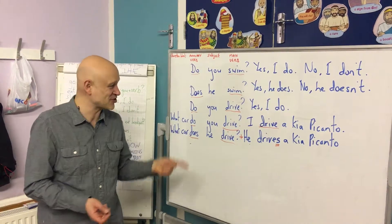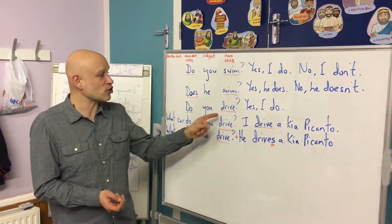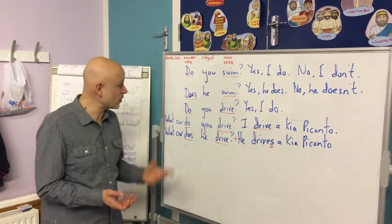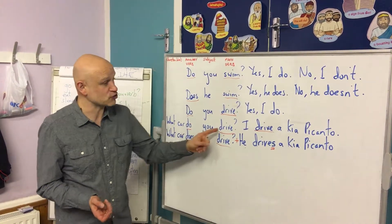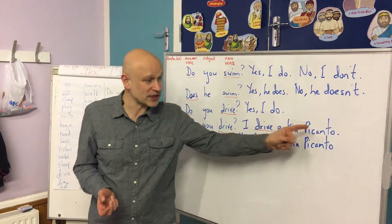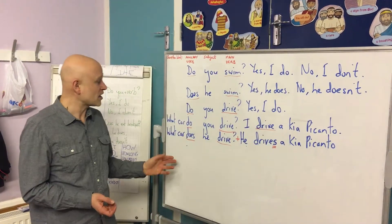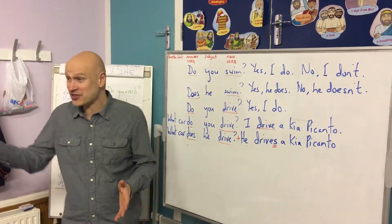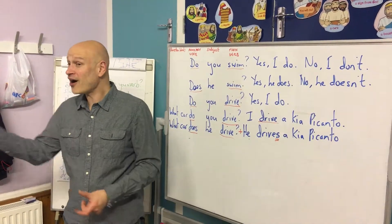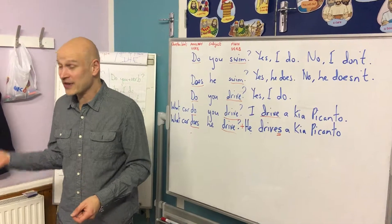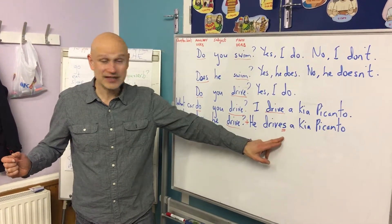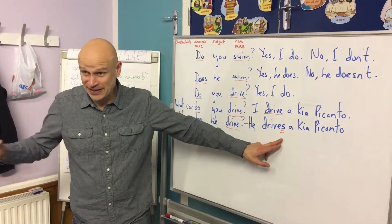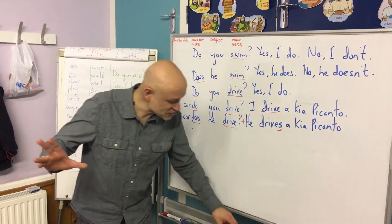More information. 'Do you drive?' — 'Yes, I do.' 'Well, what car do you drive?' — 'I drive a Kia Picanto.' And then you have to ask the third person: 'What car does he drive?' — 'He drives a Kia Picanto.'